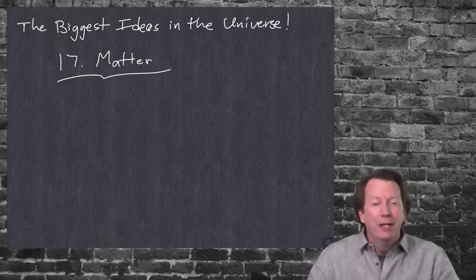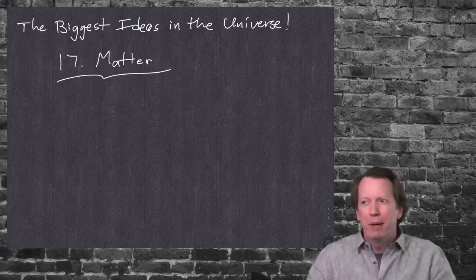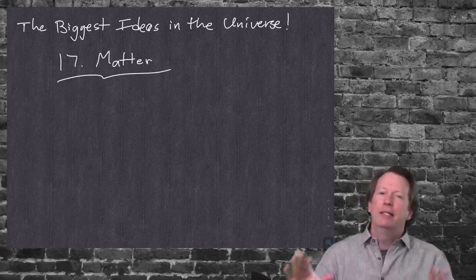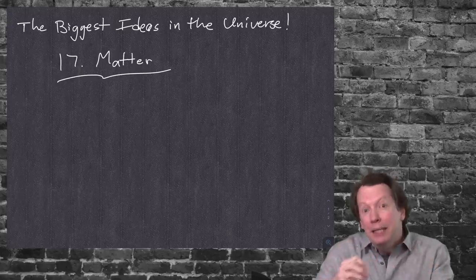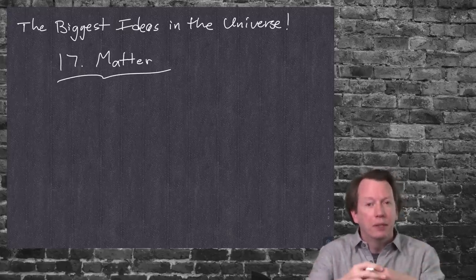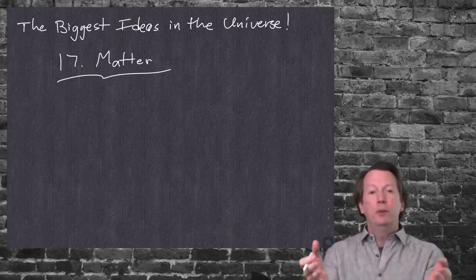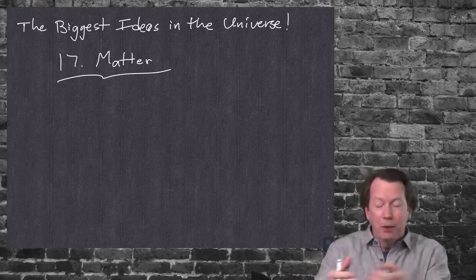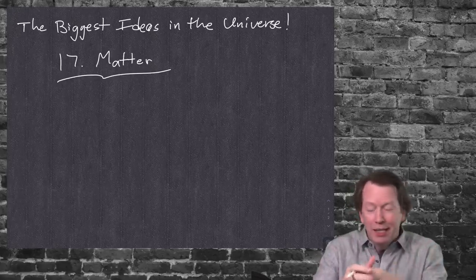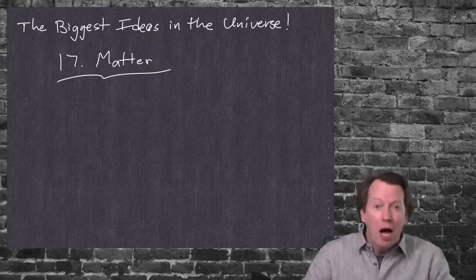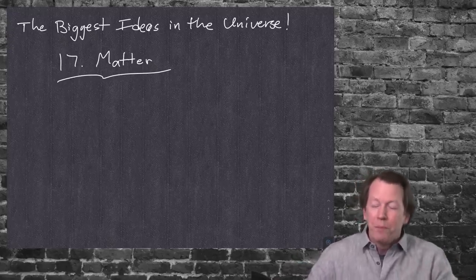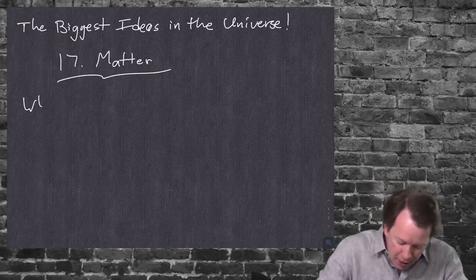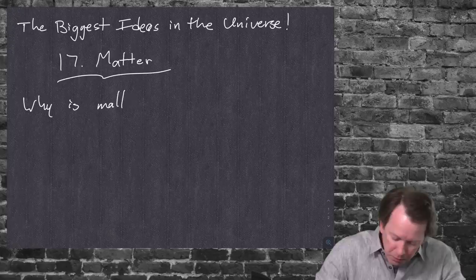We've done a lot of work building up quantum field theory, the standard model, and gauge theories. We have other fish to fry, so we're going to focus less on that. This video will still be about quantum field theory, but a more tangible aspect — things that are a little more familiar and easily grasped. Most of today's idea is going to be about a single feature of matter: that it can be solid. Why is matter solid?